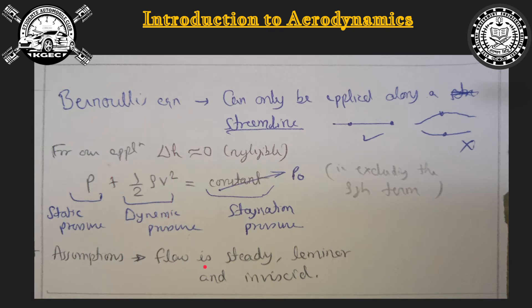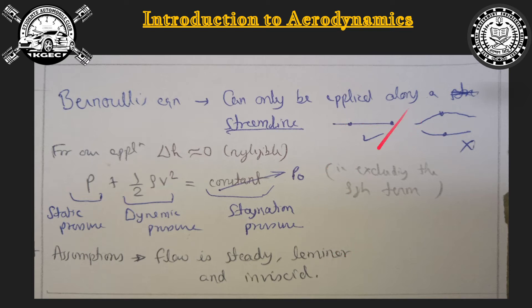While deriving Bernoulli's equation, a few assumptions are made: the flow is steady, laminar, and inviscid. Steady flow means the flow remains invariant with time — it does not change. Laminar flow is a straight, ordered flow without any mixing of air particles; an air particle moving along one streamline never mixes with another. The opposite is turbulent flow, where rapid mixing of air particles takes place.